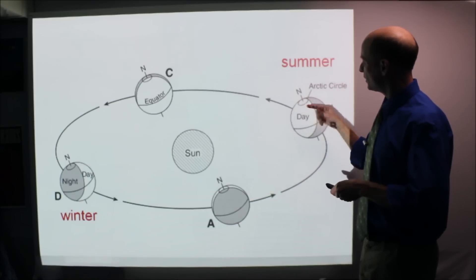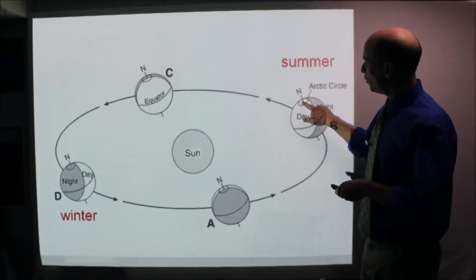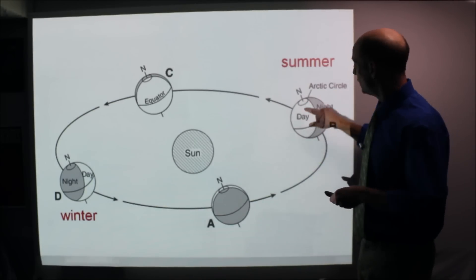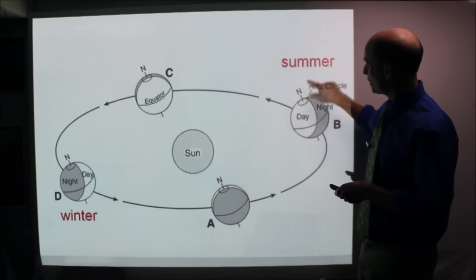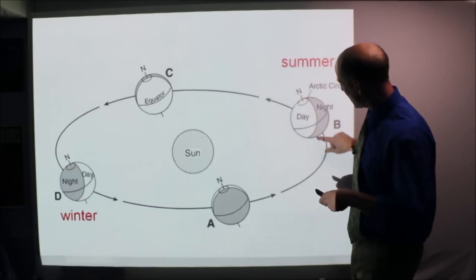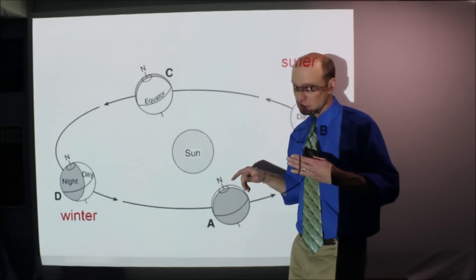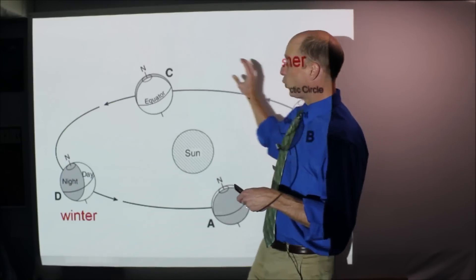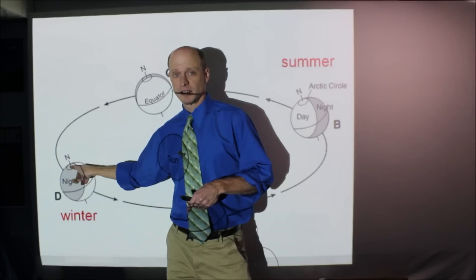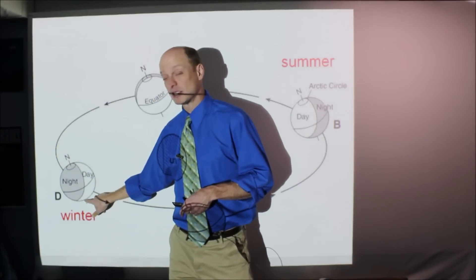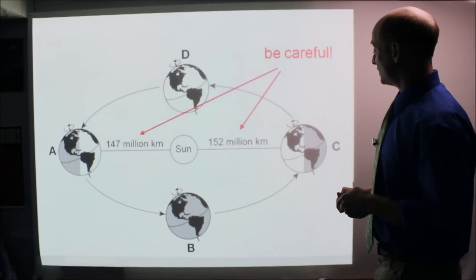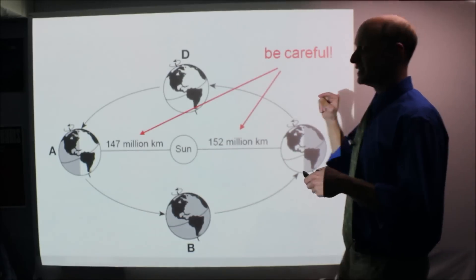Here's the north pole — Earth is rotating once every day. In summer, do you ever rotate into the dark night side? No. So if you're close to the north pole in the Arctic Circle in summertime, that's where they have 24 hours of sunlight. At the same time, the south pole has 24 hours of darkness. When it's winter for us, the north pole never rotates into the light side — 24 hours of darkness — and the south pole has 24 hours of light.